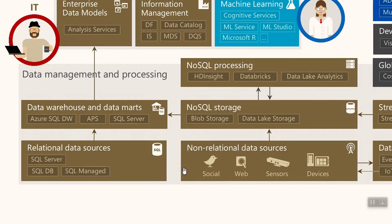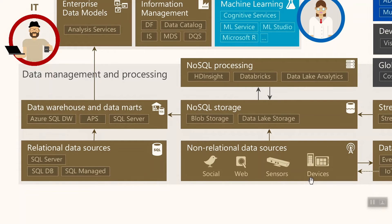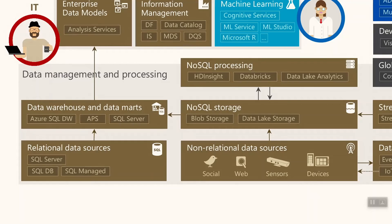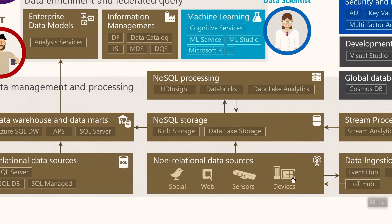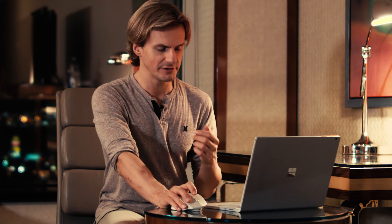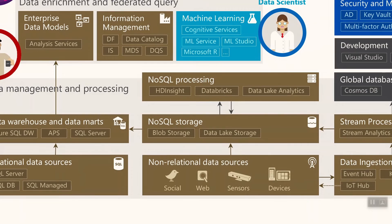Non-relational data sources include data from social networks, websites, sensors, and different types of devices — basically NoSQL data, where the structure is not yet defined on top of it. Data from non-relational sources can be stored in different types of NoSQL storages, like Blob Storage, which is compatible with other products, or Data Lake Storage, which is more scalable and has more enterprise-ready features.